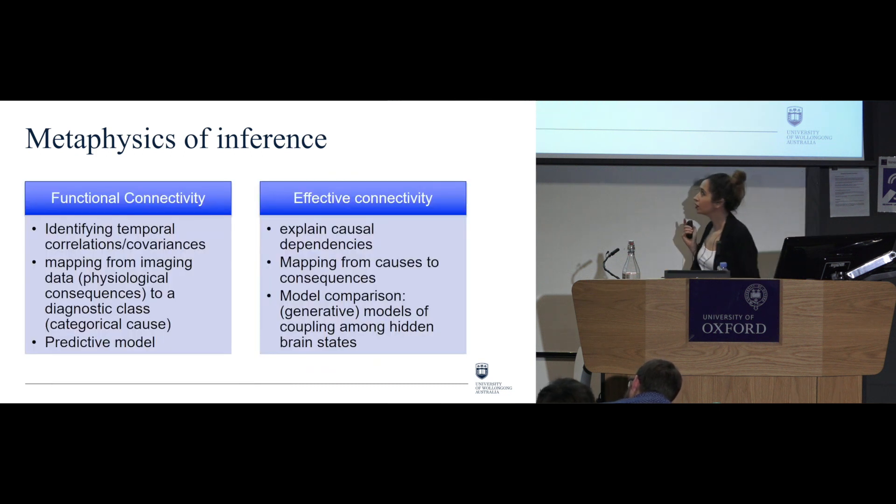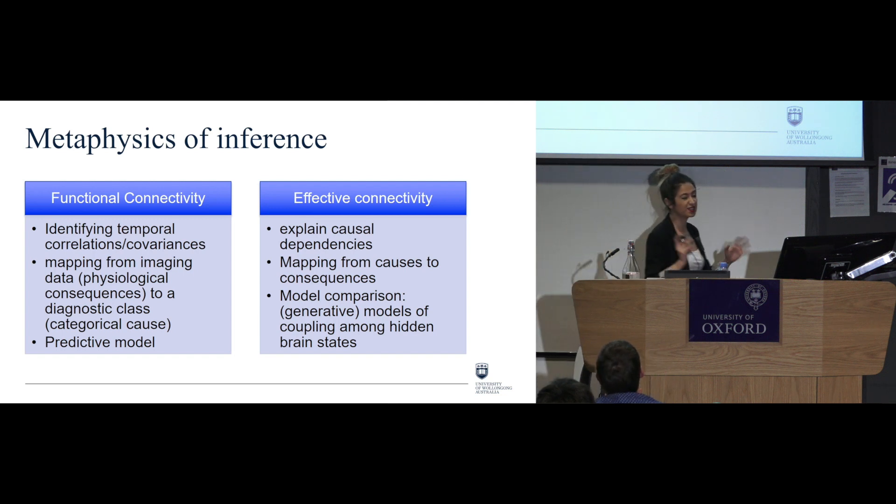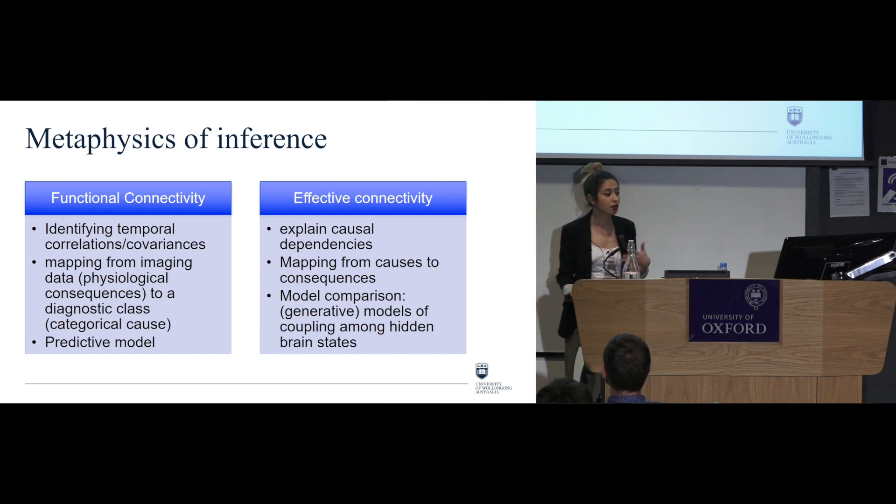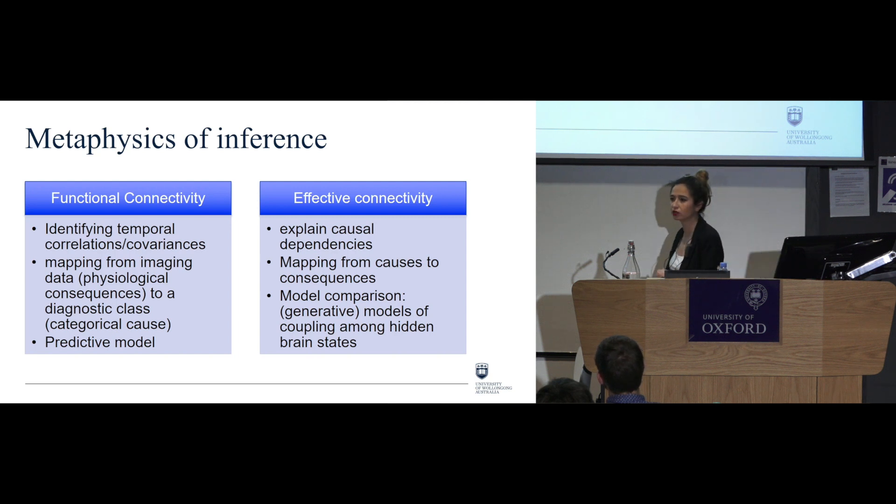Okay, so let us just have a look at how we can just systematise these differences between functional and effective connectivity, which allows me to then move forward to effective connectivity. Okay, on the one hand, we have the functional connectivity as being sort of identifying temporal correlations or covariances, and on the other hand, effective connectivity as a matter of explaining these causal dependencies. We have also on functional connectivity, the aim to map from imaging data, which is its physiological consequences to its diagnostic class, which is a categorical kind of cause. On the other hand, we have on effective connectivity, a sort of a model comparison, as we just saw, generative models of coupling among these hidden brain states.